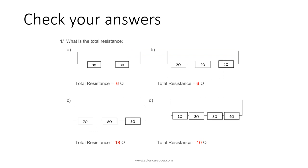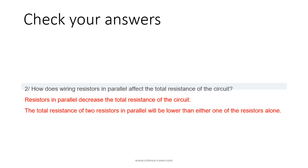Let's check our answers to task 3. The total resistance of A is 6 ohms. The total resistance of B is 6 ohms. The total resistance of C is 18 ohms. The total resistance of D is 10 ohms. Resistors in parallel decrease the total resistance of the circuit. The total resistance of two resistors in parallel will be lower than either one of the resistors alone.